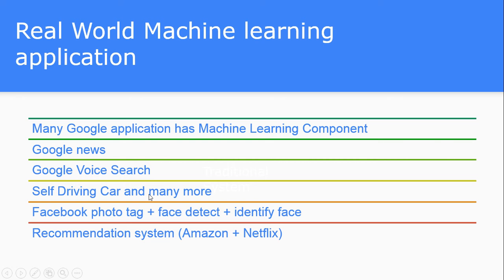Self-driving cars and many more products — a lot of Google's products and almost every other Silicon Valley tech giant company is trying to put machine learning components inside every software system. Facebook has their photo tagging system which identifies and recognizes faces from images automatically — all possible because of machine learning. There are recommendation systems on Amazon for product recommendations and on Netflix for movie or show recommendations, all possible with the help of machine learning. Apart from all this, every single company in Silicon Valley or elsewhere is trying to put machine learning into their individual systems to make those systems more intelligent.